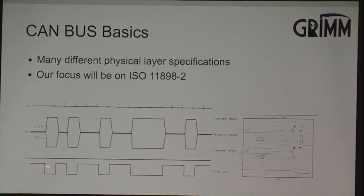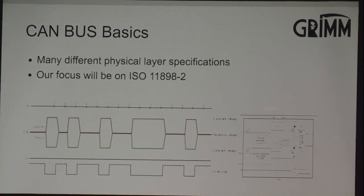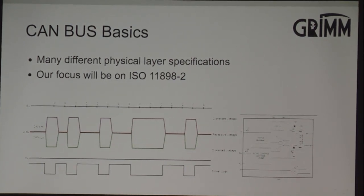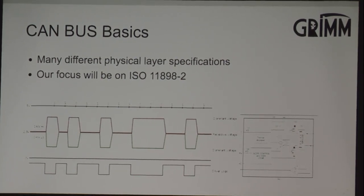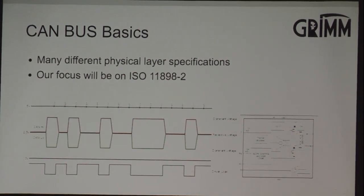Vice versa: when your microcontroller tries to transmit a one, your CAN transceiver will translate that into the recessive state — it'll let go of the bus and let it do what it wants. Transmit a zero, and it will assert a zero on the bus. The one key feature of CAN: if any node on the bus is transmitting a zero — asserting the dominant state — the state of the bus will be dominant. For the bus to be recessive, all nodes must be transmitting recessive.